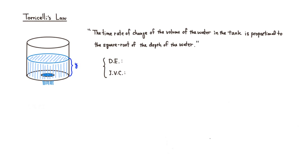So let's translate that into a differential equation. The time rate of change of the volume is just the derivative of the volume V with respect to time dt, and that is equal to — since volume is decreasing, I'm going to use negative — so it's a negative K times the square root of the depth of the water. In this case I'm using Y. So here's the differential equation.